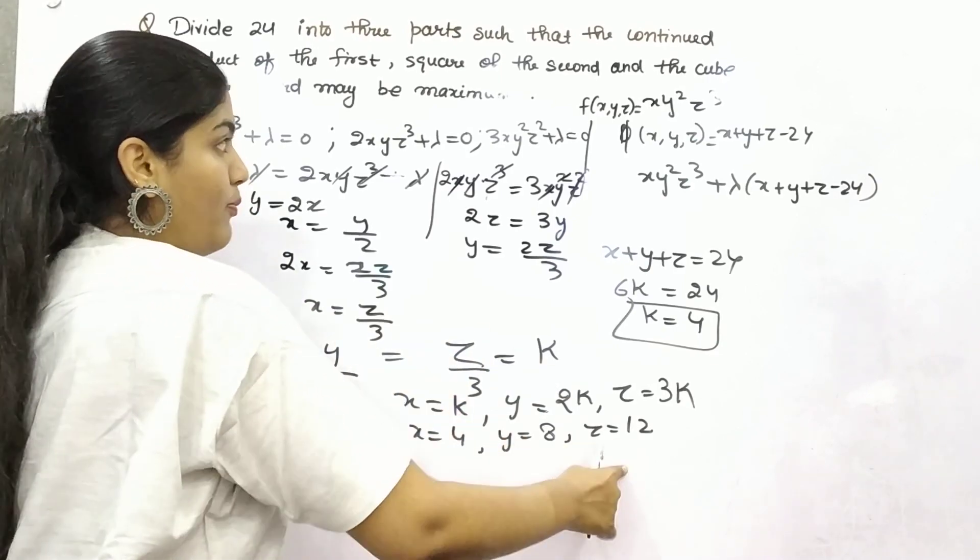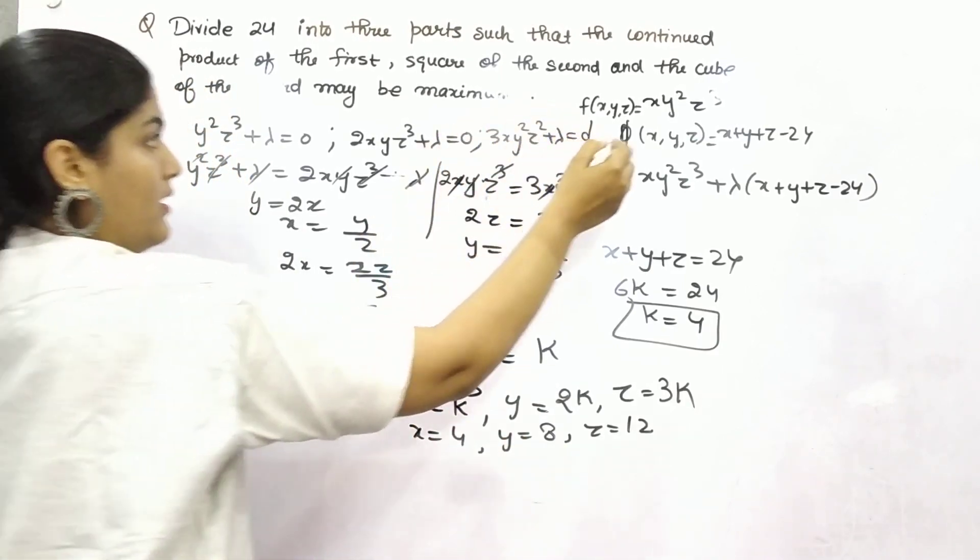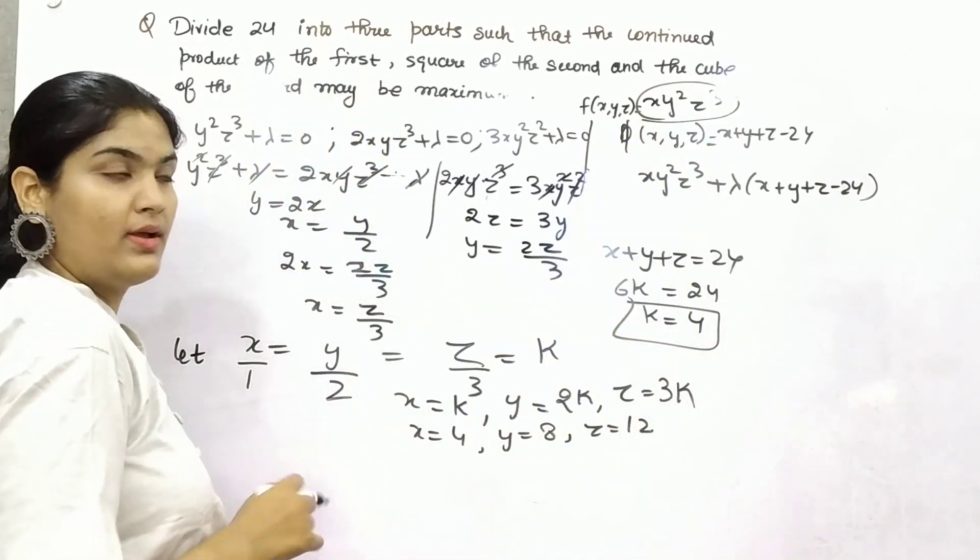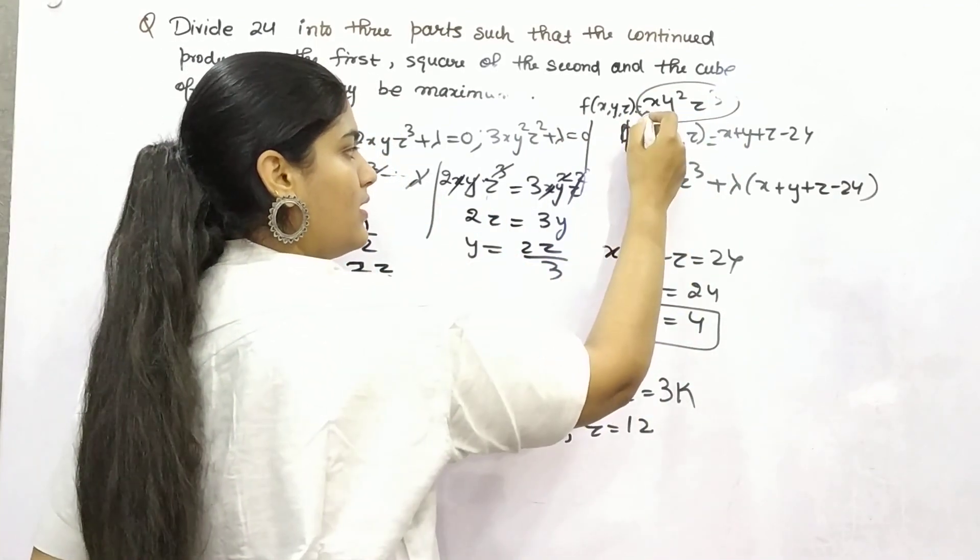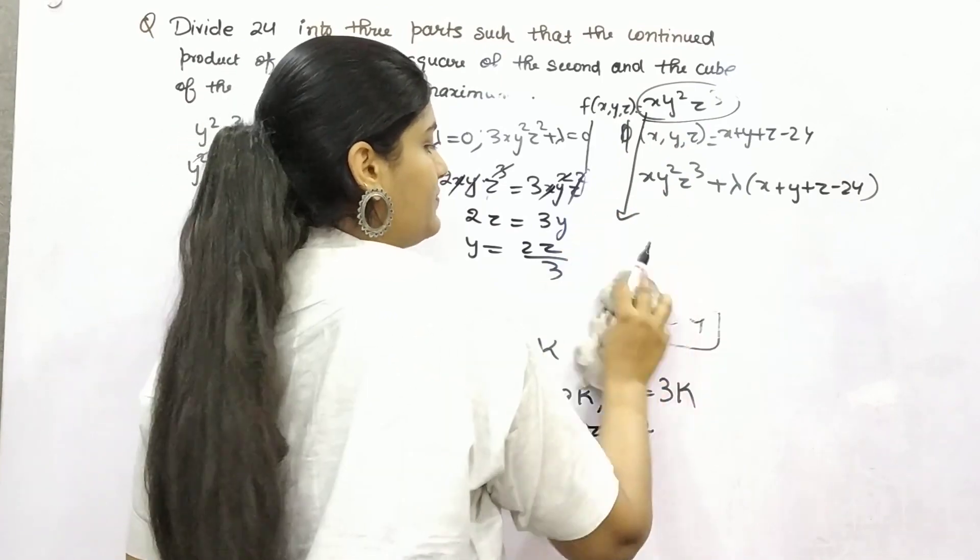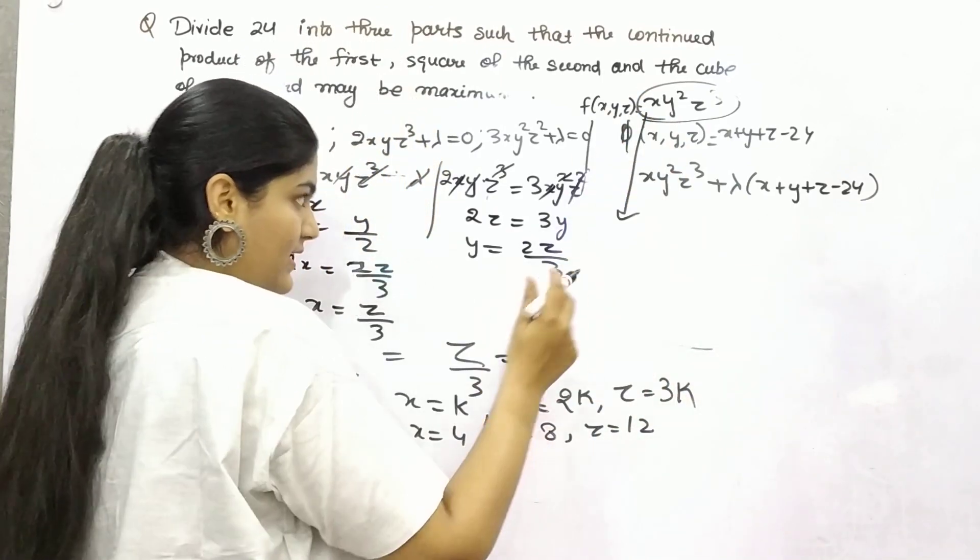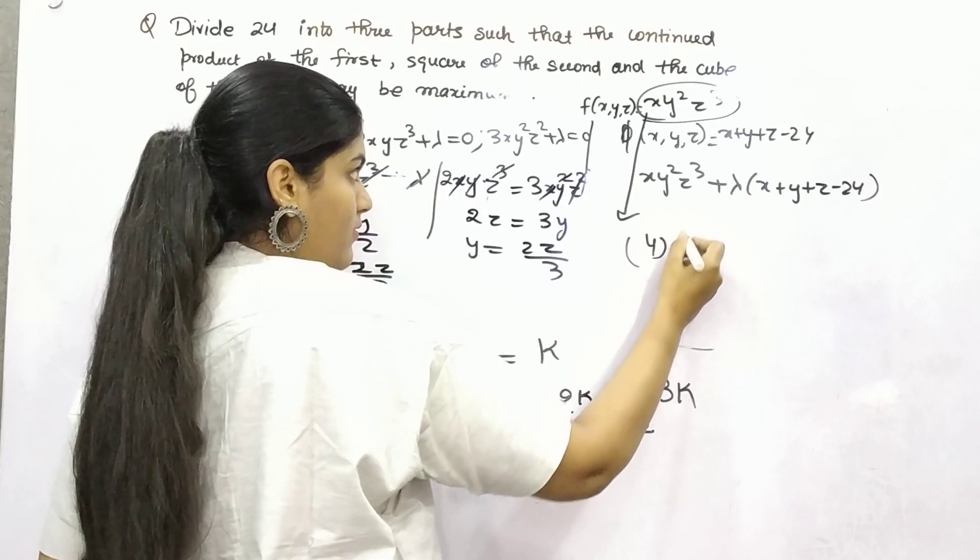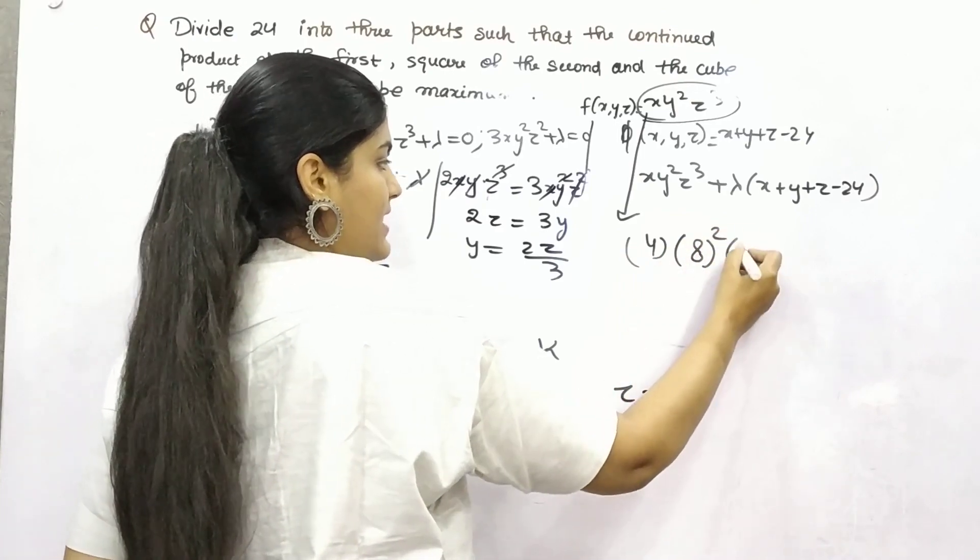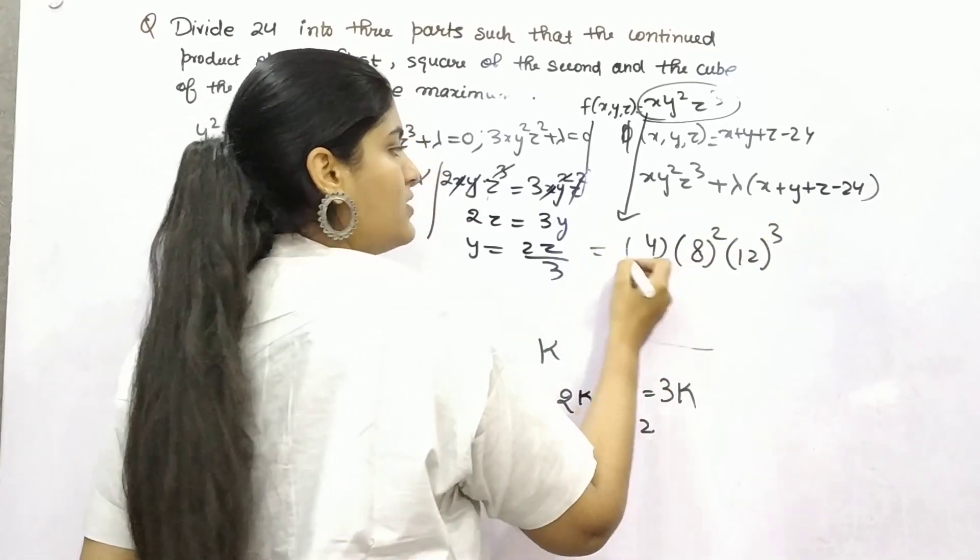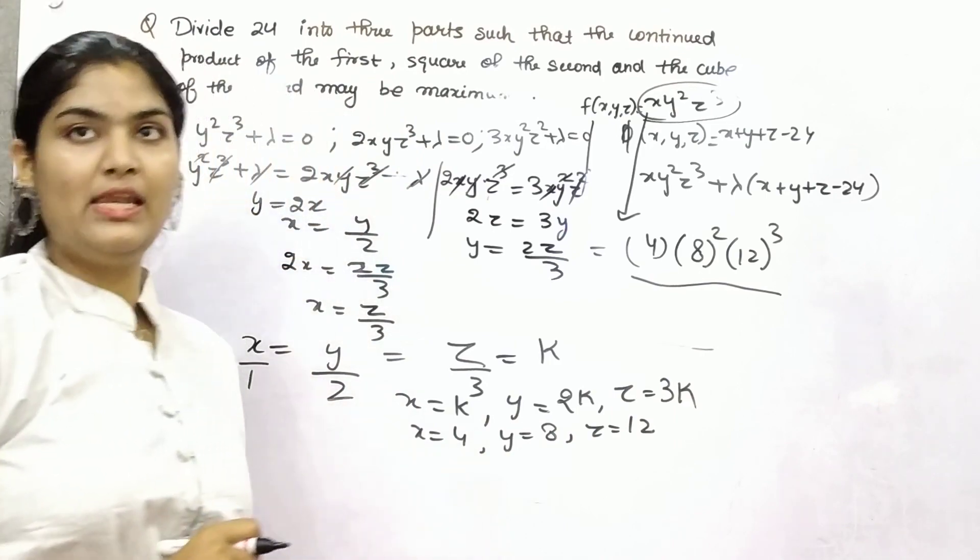So these are the points where your main function will be maximum. And the maximum value of function, if you see, put these values: x is 4, y is 8, and z is 12. This will be your maximum value of a function.